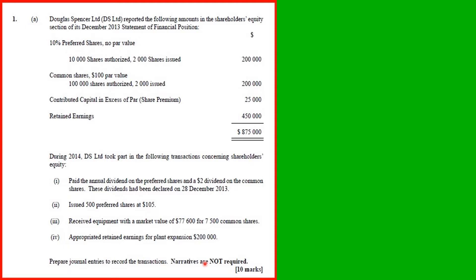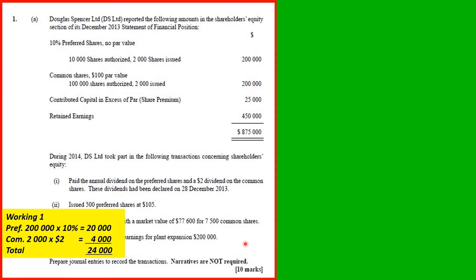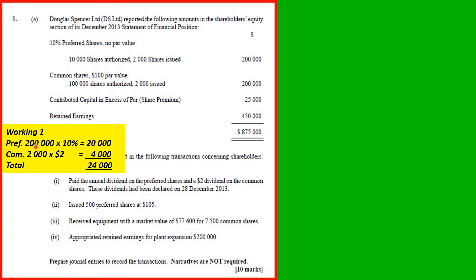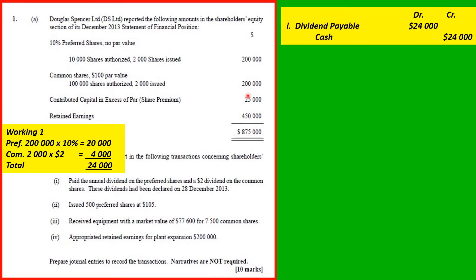Prepare journal entries to record the transactions. Narratives are not required. We look at the workings first. For the preference share dividend: 200,000 by 10% gives us $20,000.